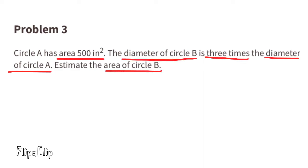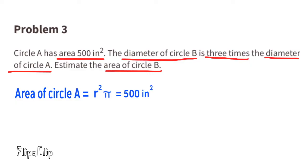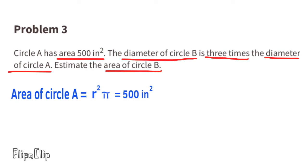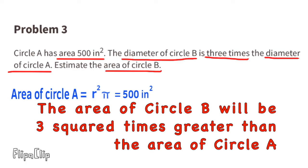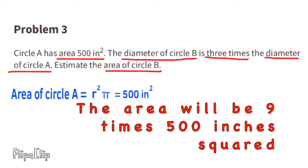Problem number three: Circle A has an area of 500 inches squared. The diameter of Circle B is three times the diameter of Circle A — estimate the area of Circle B. The area of Circle A equals the radius squared times pi, so the radius squared times pi equals 500 inches squared. If Circle B's diameter is three times greater than Circle A's diameter, then Circle B's radius is also three times greater. That means the area of Circle B is three squared — which equals nine — times greater than the area of Circle A.